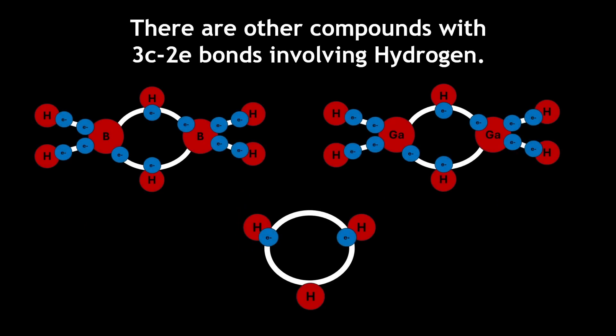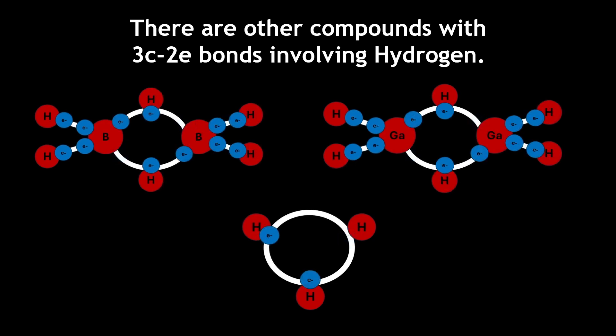There are other compounds that also have 3c-2e bonds involving hydrogen, including digalane and the trihydrogen cation.